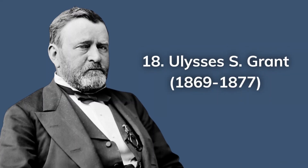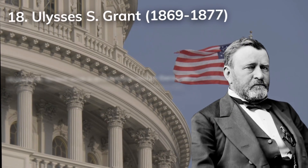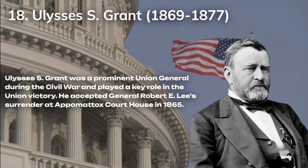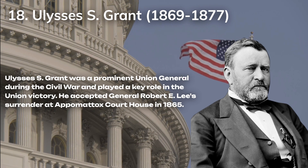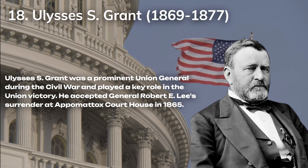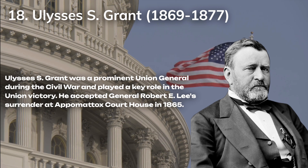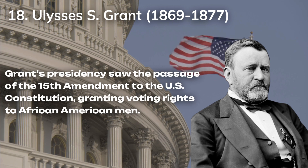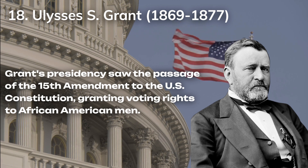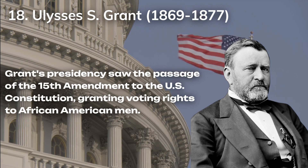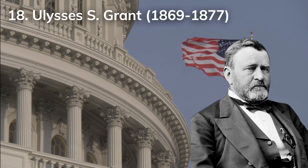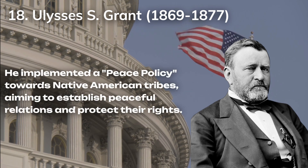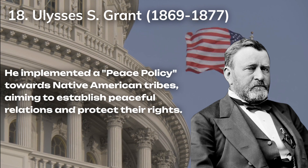On to the 18th president, Ulysses S. Grant. Grant was a prominent Union general during the Civil War and played a key role in the Union victory. He accepted General Robert E. Lee's surrender at Appomattox Courthouse in 1865. Grant's presidency saw the passage of the 15th Amendment to the U.S. Constitution, granting voting rights to African American men. He also implemented a peace policy towards Native American tribes, aiming to establish peaceful relations and protect their rights.